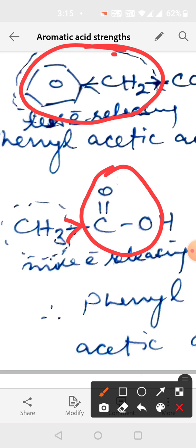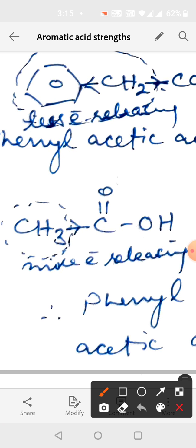CH3 has electron releasing tendency. But due to the presence of this phenyl group which has somewhat electron withdrawing tendency, the overall tendency of this group to release electrons towards COOH is diminished. It decreases. So because it has less electron releasing tendency than CH3 group, so phenyl acetic acid is stronger acid than the acetic acid.